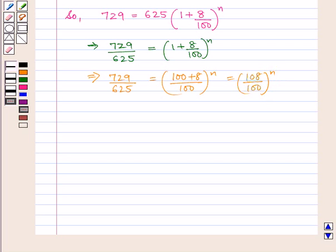Now, as 729 is the square of 27 and 625 is the square of 25, this implies (27 upon 25) squared equals (108 upon 100) raised to power N. Now, 4 times 25 is 100 and 4 times 27 is 108.